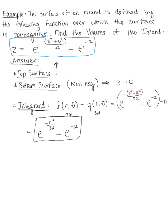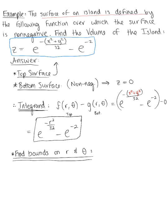We still need to find the bounds on r and theta. To find these bounds, we keep in mind that the island's surface is defined by the given function over the region where it's non-negative. So we set z greater than or equal to 0 and solve for x and y.